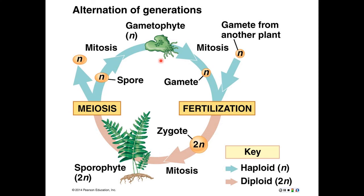The gametophyte produces gametes through the process of mitosis. That might sound strange because we're used to thinking of gametes as being produced by meiosis, but in this case the gametophyte is already haploid. If it were to do meiosis, it would reduce the genetic material yet again — that would be bad. So it produces gametes through mitosis instead.